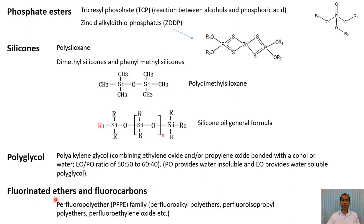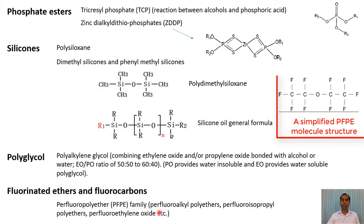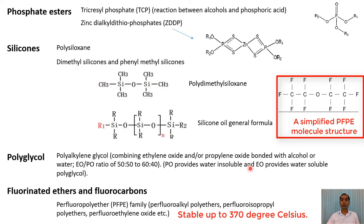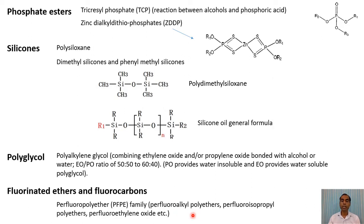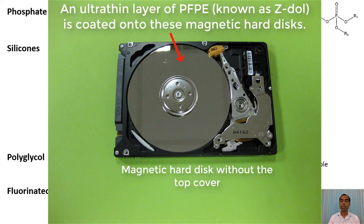Other synthetic oils include fluorinated ethers and fluorocarbons, where hydrogen has been replaced by fluorine. One example is PFPE (perfluoropolyether) family. PFPE is used in high temperature greases for space applications and other high temperature applications. An important application of PFPE is in magnetic hard disks and magnetic tapes used for data storage in computers, where a very thin layer of PFPE is used for lubrication — and for this specific application, only PFPE can be used; no other lubricants have been found suitable.